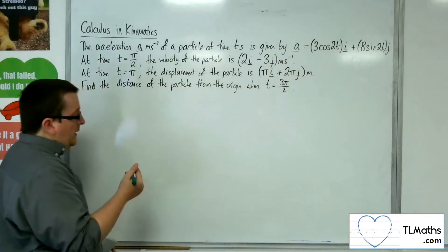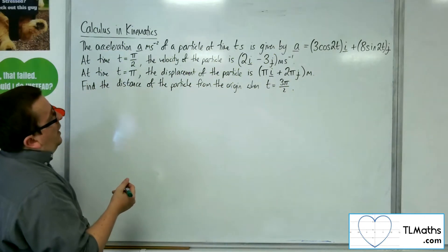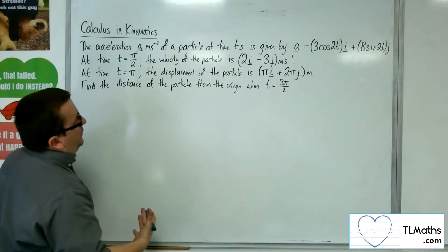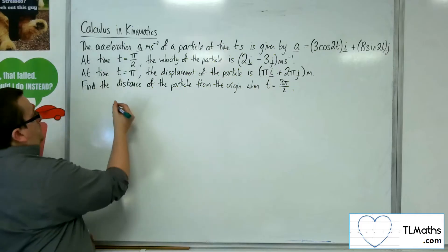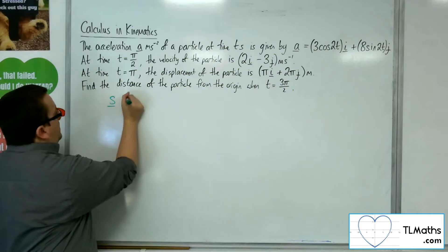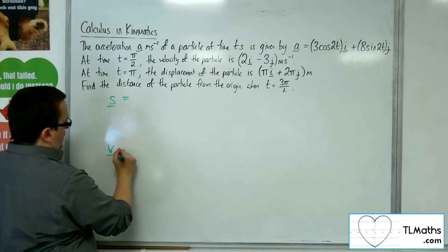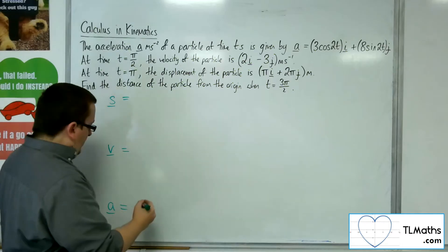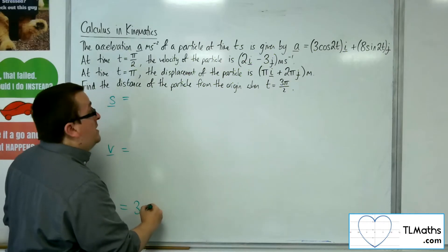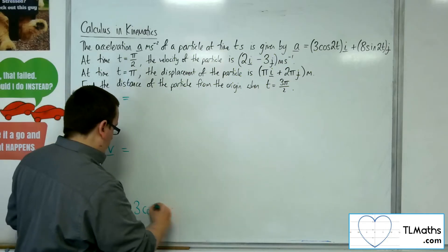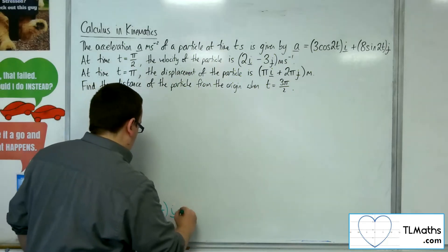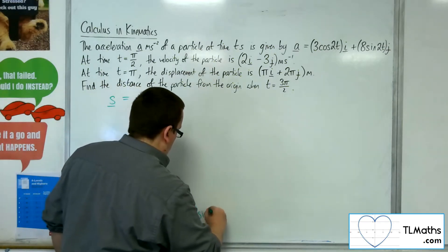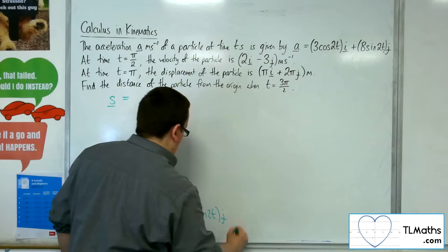First of all, I'm going to need to integrate my way up to get to the velocity. We're going to have the displacement, the velocity, and the acceleration. The acceleration is given by 3 cos 2t i plus 8 sine 2t j.